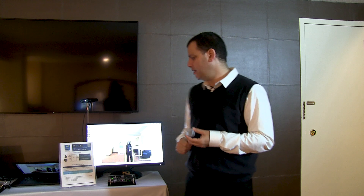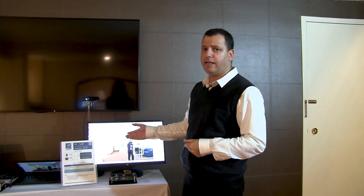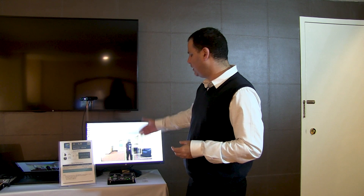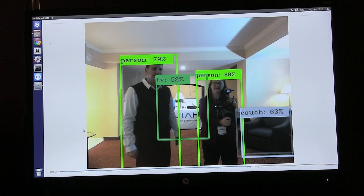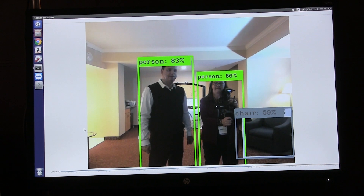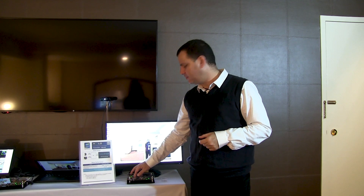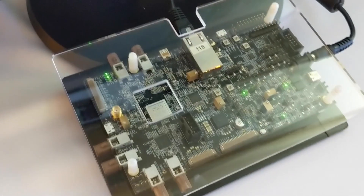Let's start with the first demonstration. The first demonstration is MobileNet SSD at HD resolution. The input from the camera is HD resolution — again, we are not doing any downscale. You are able to see classic detection of a person, a chair, and so on. All of this is within the envelope of 0.4 watts. This is quite amazing. We are able to touch the device itself; it's been working from the morning and it doesn't heat up.